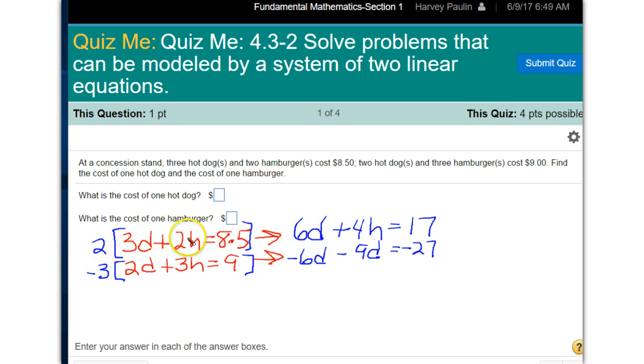You get 6d plus 4h equals 17. Remember to multiply each of them. And then here, negative 3 gives you a negative 6d. So these would then cancel out. Negative 9h and then a negative 27. So now when you added them up, you would be able to get d equals something. And I'll let you work on that.